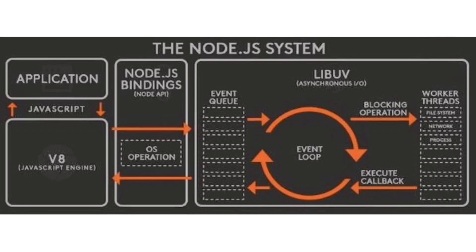A runtime environment gives all the necessary resources that JavaScript needs in order to execute a particular set of tasks. For example, the browser is also a runtime environment. In the browser, JavaScript gets capabilities to actually interact with the DOM, set timers, and all of those things. Similarly, there is Node.js. Using Node.js, JavaScript gets the capabilities to actually interact with your file system and get OS-level capabilities.